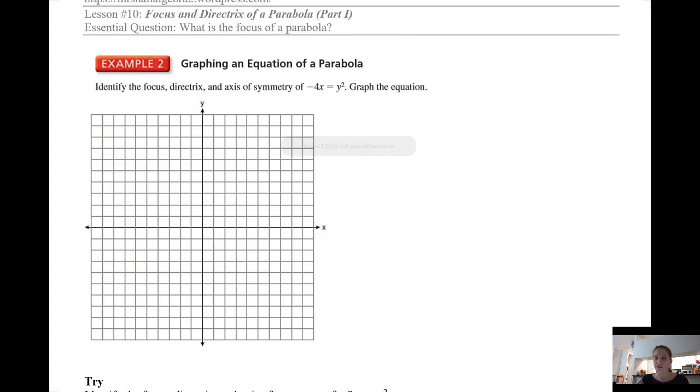Example two, graphing an equation of a parabola. Identify the focus, directrix, and axis of symmetry of negative four x equals y squared. Graph the equation. Since y is squared, I know this is going to be a sideways parabola. I'm going to want to get this equation in terms of x. To get x by itself, I can divide both sides by negative four. And I get that x equals negative one-fourth y squared.